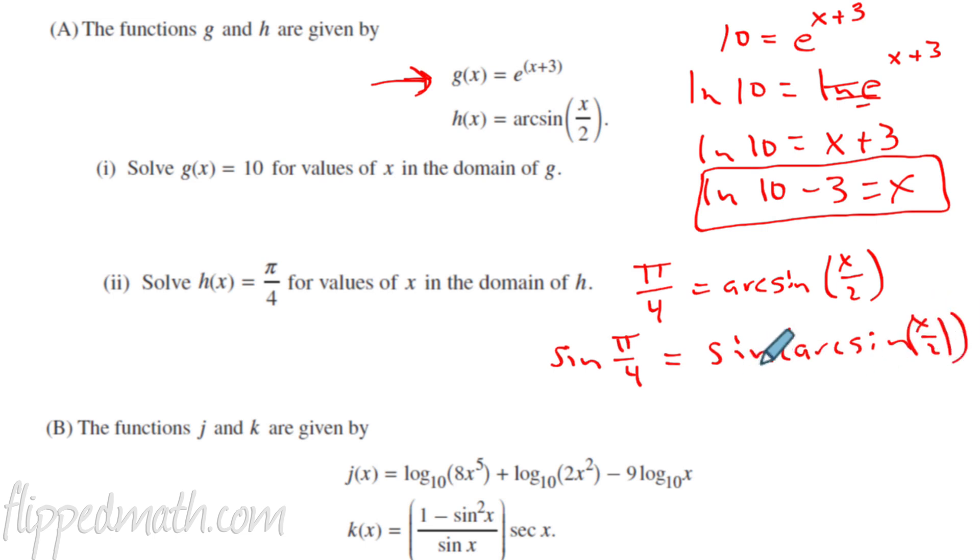So we get the sine of pi over 4 equals the sine of arc sine or the angle whose sine is x over 2. Now look, if you take the sine of the angle whose sine is x over 2, that's just going to equal x over 2, right? On the left here, the sine of pi over 4. Well, that is a unit circle problem. You got to know that. That's radical 2 over 2. So now what? Multiply both sides by 2 and you get radical 2 equals x. And we're done with that one. That was easy as well.